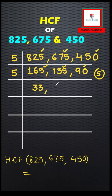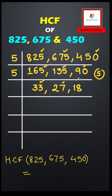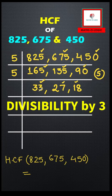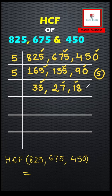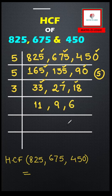So we get 33, then 27, and then 18. Now I look at the last digits — not 5 or 0 — so I'll use divisibility by another number. Using the table of 3, all three numbers can be divided by 3: 3 × 11 = 33, 3 × 9 = 27, and 3 × 6 = 18.